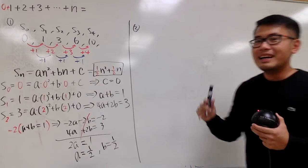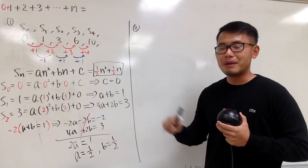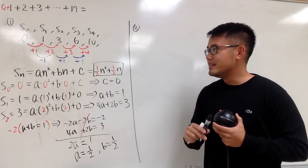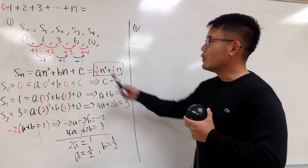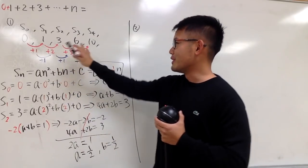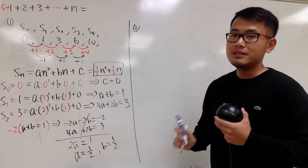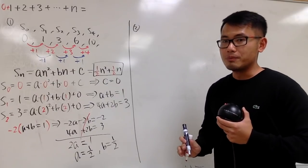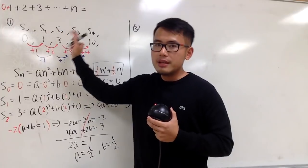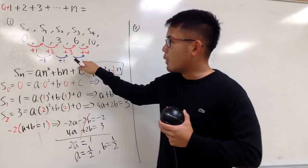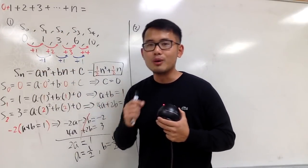Second way. We are still going to use the n-th partial sum, but this time slightly differently — much quicker. We set up the same sequence of partial sums, and we notice that on the second level of differences, we have all 1s.